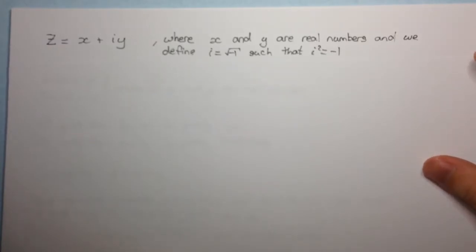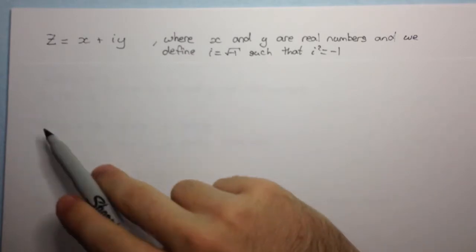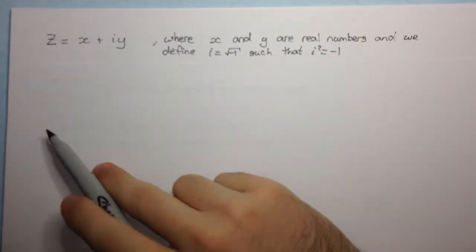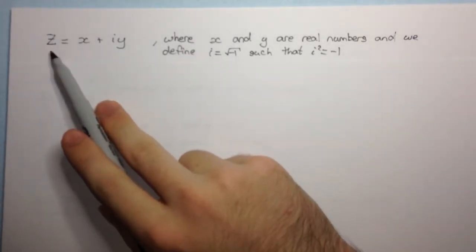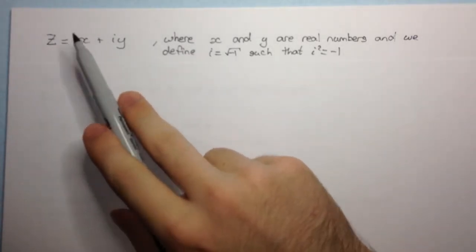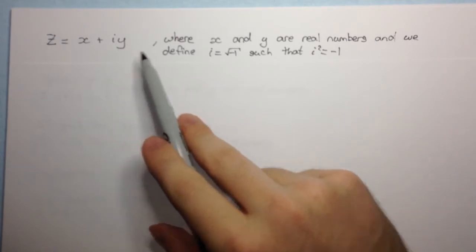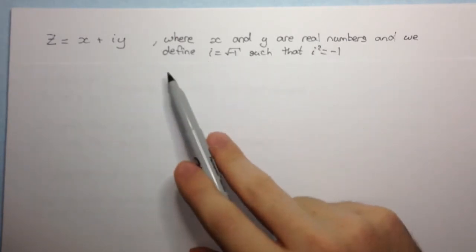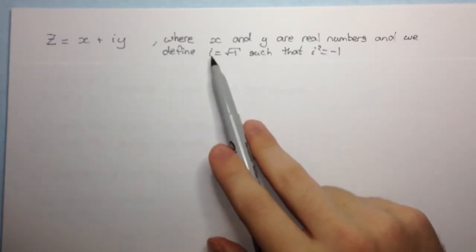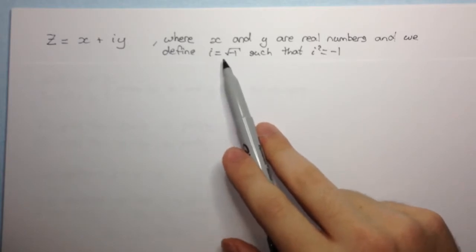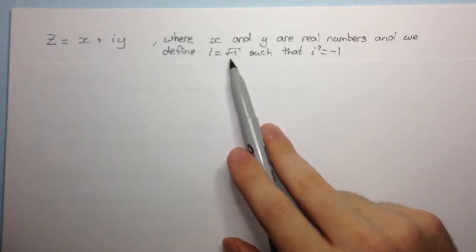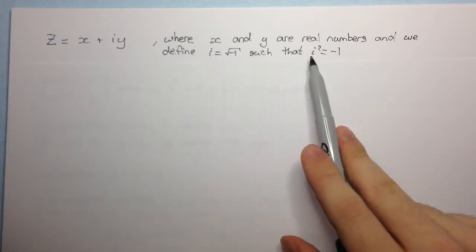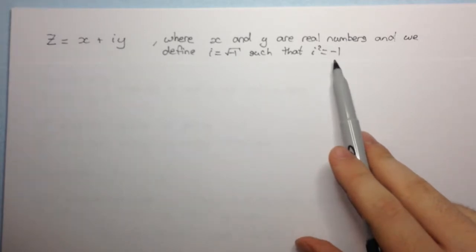In the last video we saw that we defined the complex numbers as the set of all numbers of the form z equal to x plus iy, where x and y are real numbers, and we define i equal to the square root of minus 1, such that i squared equals minus 1.